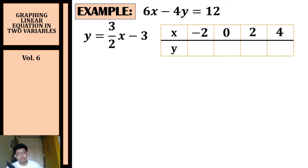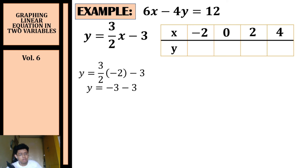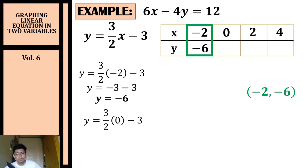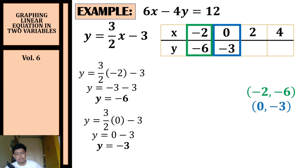Substituting x equals negative two: y equals three-halves times negative two minus three, which simplifies to negative three minus three, so y equals negative six — coordinate (−2, −6). Substituting x equals zero: any number multiplied by zero is zero, so y equals negative three — coordinate (0, −3).